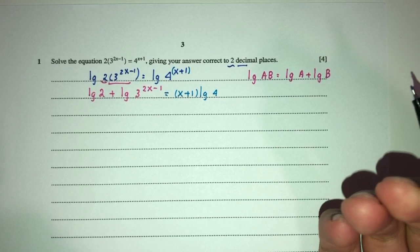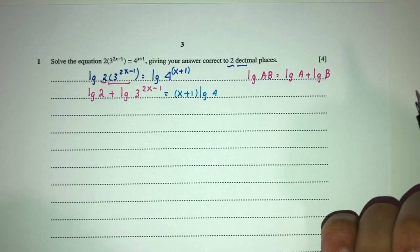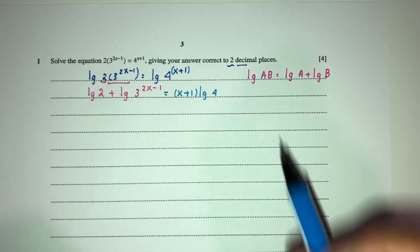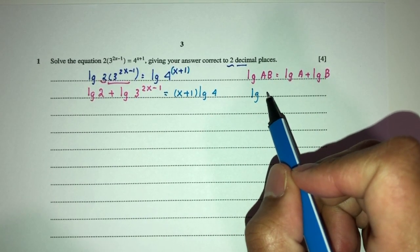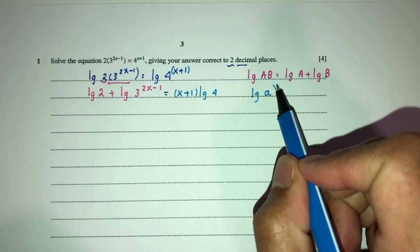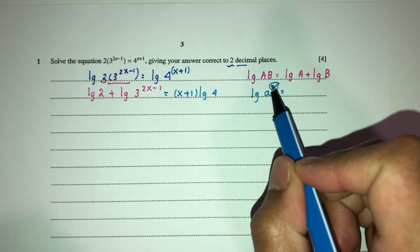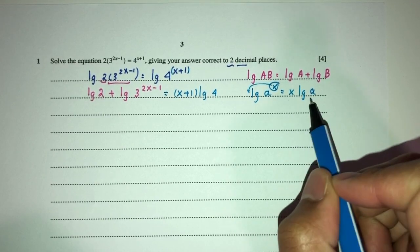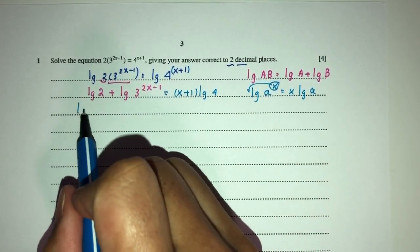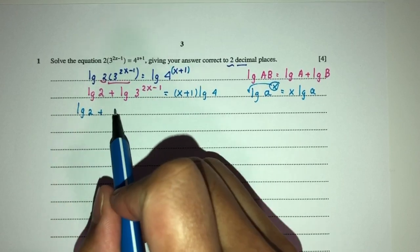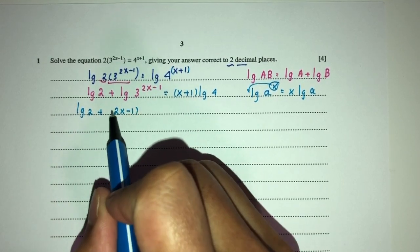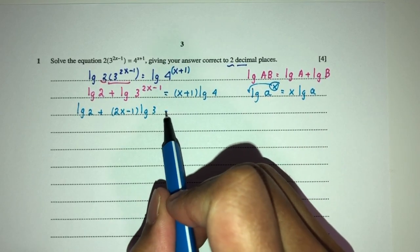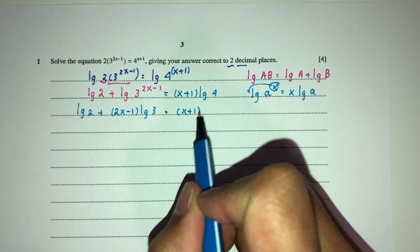Now again, this question is we're trying to find the value of x, so we have to focus on making x the subject of the formula. As a rule here, we should know, let's say we have log of a power x, send this one here, same thing as x log of a. So we can do this and this. Using this knowledge, we can have simplified this. That would be log of 2 plus, that would be 2x minus 1 and log of 3. Equal to x plus 1 log of 4.